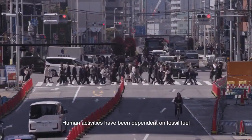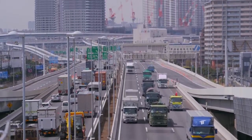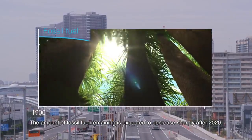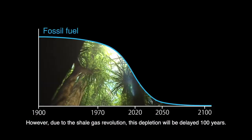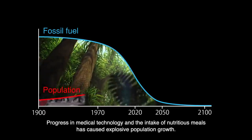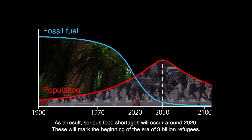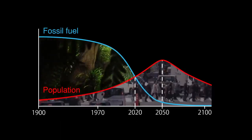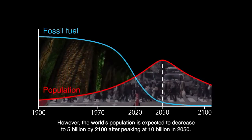Human activities have been dependent on fossil fuel. Fossil fuel was produced and accumulated through Earth's history over billions of years, and we are now using up these fuels at a furious pace. The amount of fossil fuel remaining is expected to decrease sharply after 2020. Due to the shale gas revolution, depletion will be delayed by 100 years. Progress in medical technology and the intake of nutritious meals has caused explosive population growth. As a result, serious food shortages will occur around 2020, marking the beginning of the era of 3 billion refugees. The world's population is expected to decrease to 5 billion by 2100 after peaking at 10 billion in 2050.